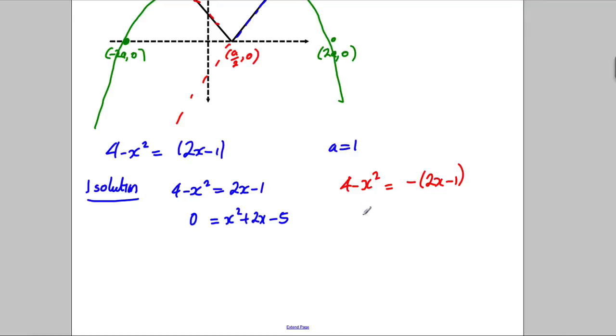And here, I'm going to do the same thing, add x squared to both sides. Well, firstly, let me expand the brackets. 4 subtract x squared equals negative 2x, add 1. Add x squared to both sides, take away 4. 0 equals x squared, take away 2x, and take away 3. So, I'm trying to factorise this. This is going to be x subtract 3, add 1. So, therefore, x...